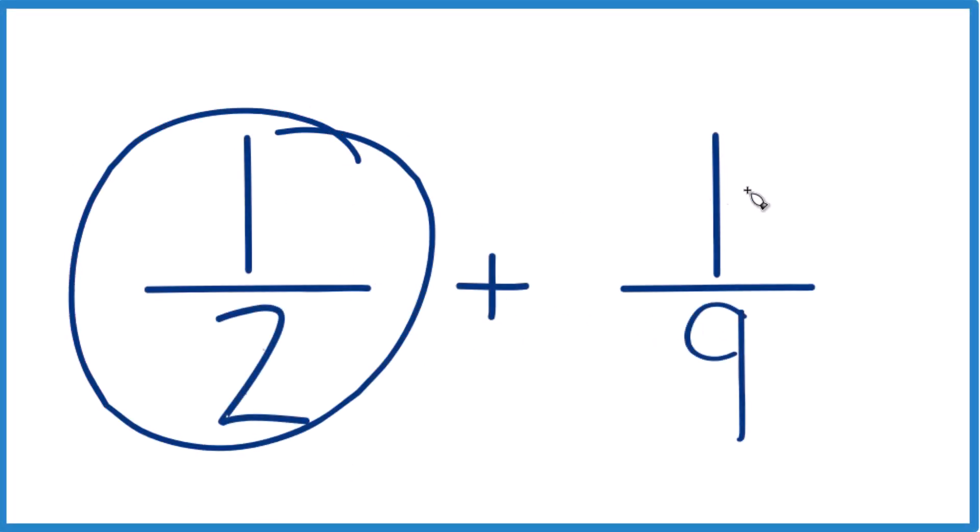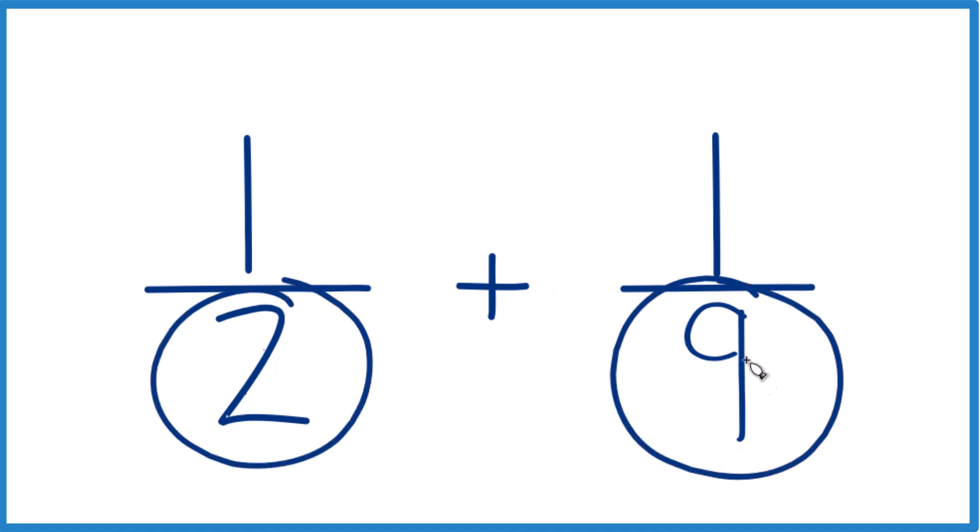Okay, let's add 1 half plus 1 ninth. The first thing we need to do, we need to get our denominators to be the same, to find a common denominator. Then we'll just add the numerators together and we'll have our answer.